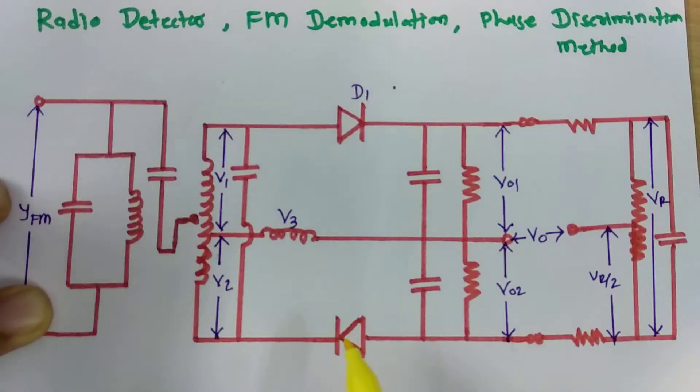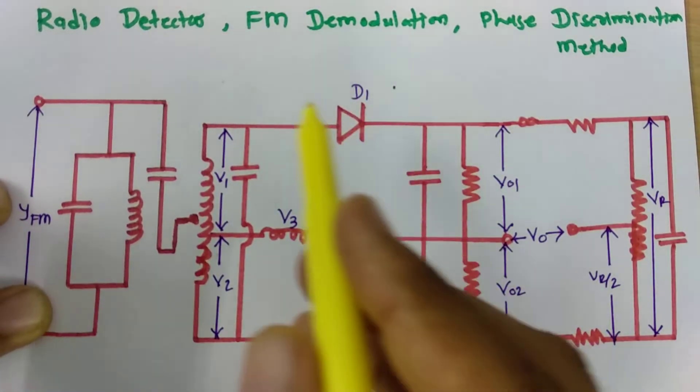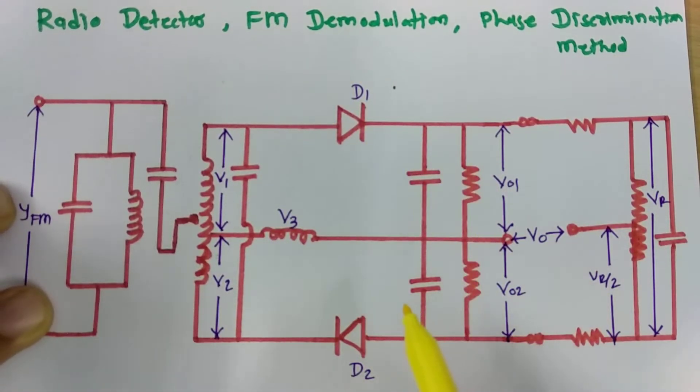Now you can see my previous video where I have explained Foster-Cilley FM demodulation technique and in that there was a problem of amplitude noise because of noise, and that is what we can improve up to some extent in radio detector.